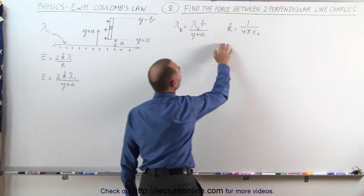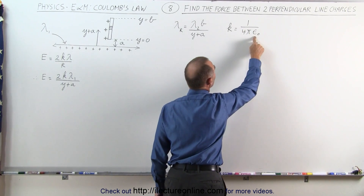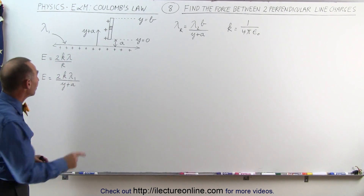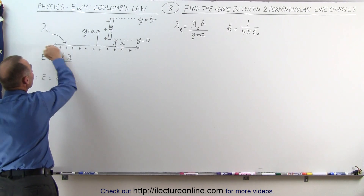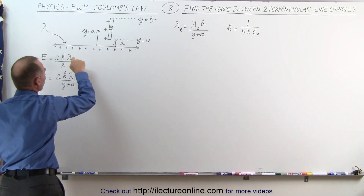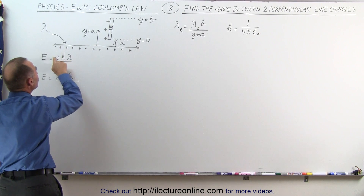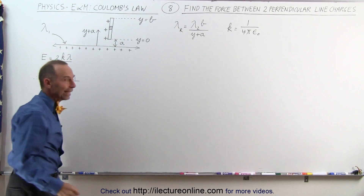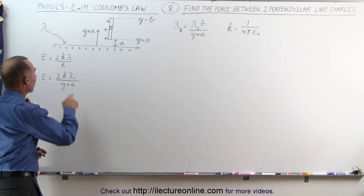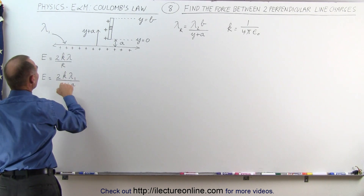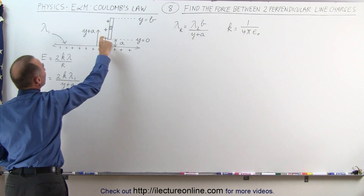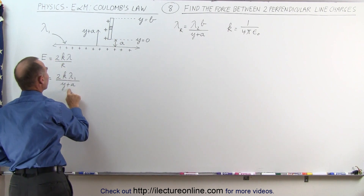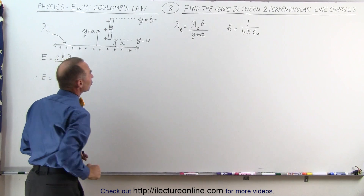Keep in mind that k equals 1 over 4πε₀, the permittivity of free space. The electric field away from an infinite line charge with charge density λ is equal to 2kλ divided by r, where r is the distance from the line charge. In our particular case the charge density is λ₁, and the distance from the line charge to a point on the rod is y + a.